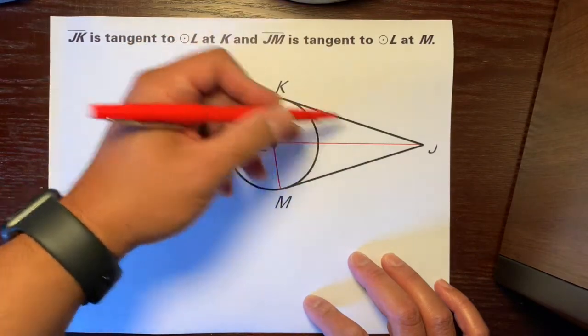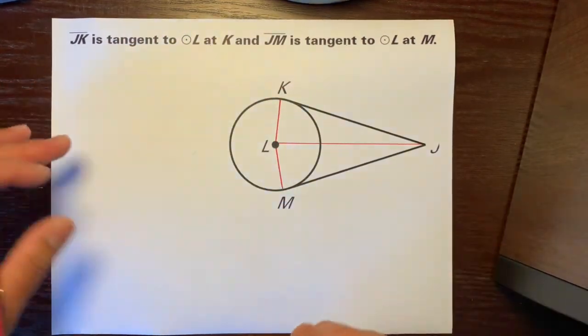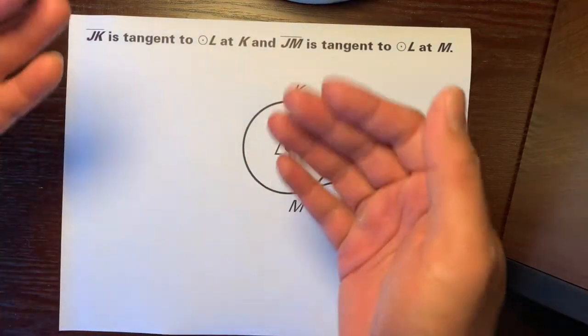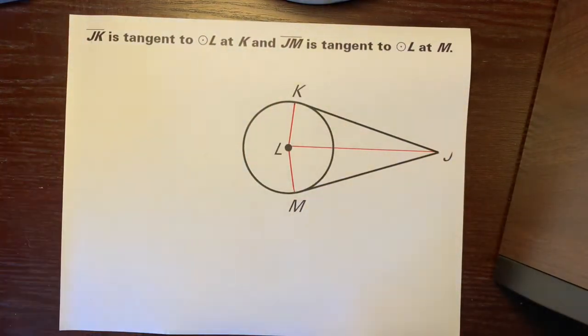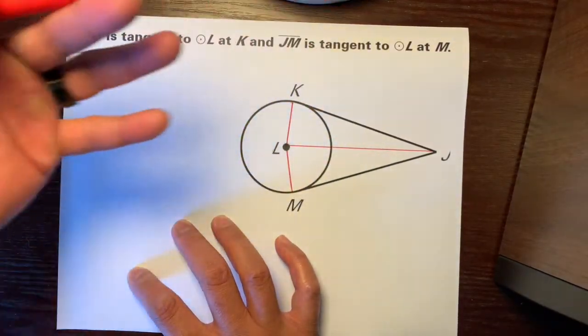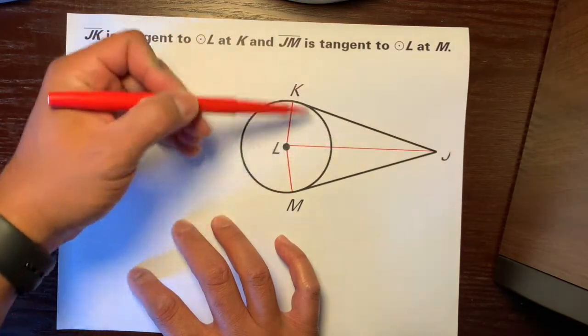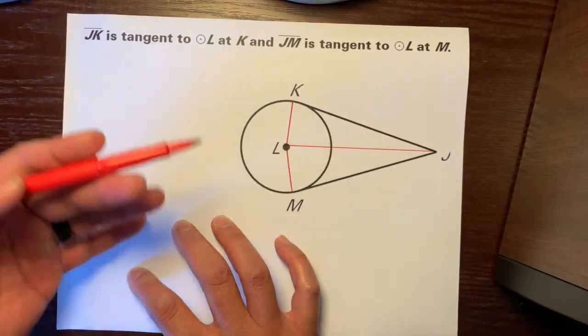So, here's one triangle, L, J, K, and another triangle, L, J, M. Now, we're going to make a flow chart and make it flow. So, first thing is, we can say that, well, our goal of our flow chart is to prove that this triangle is congruent to this triangle.